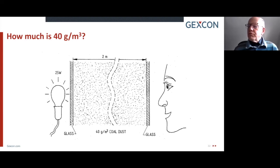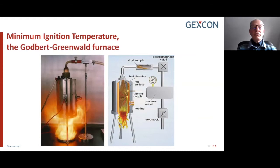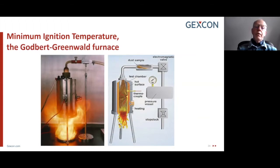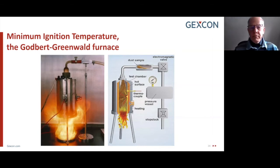Especially important with respect to area classification, which is normally determined in the Godward Greenwald oven or furnace, where you blow a dust cloud through a hot pipe and see whether it ignites or not.